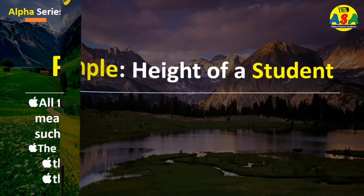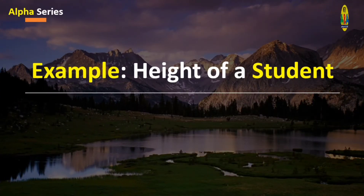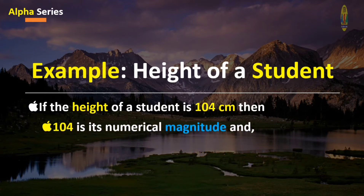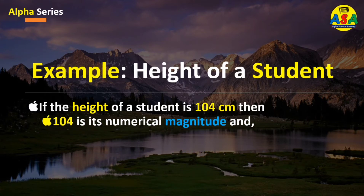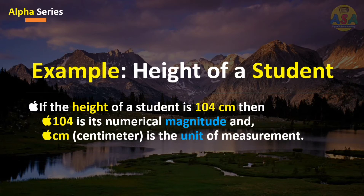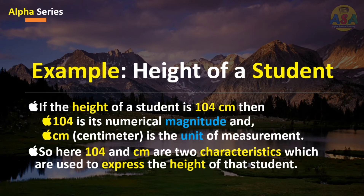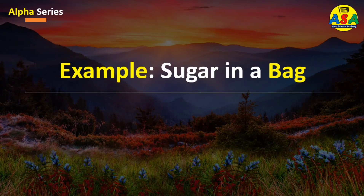Example one: height of a student. If the height of a student is 104 centimeters, then 104 is its numerical magnitude and cm, that stands for centimeter, is the unit of measurement. So here, 104 and cm are two characteristics used to express the height of that student.